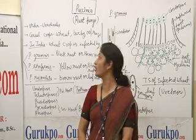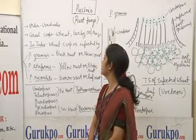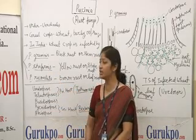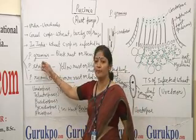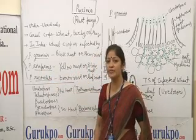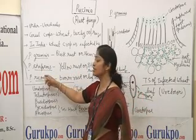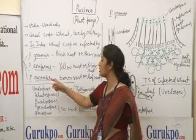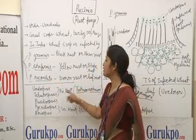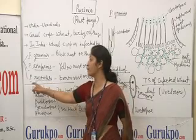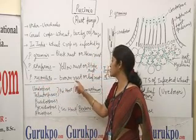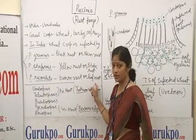In India, wheat crop is infected by the following species of Paxinia. Paxinia graminis causes black rust or stem rust disease. Paxinia striiformis causes yellow rust or striped rust disease. And Paxinia recondita causes brown rust or leaf rust disease.